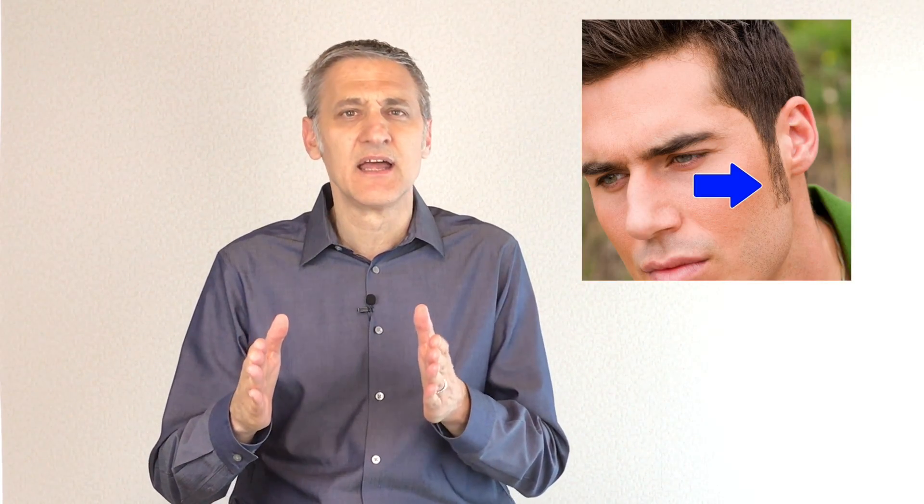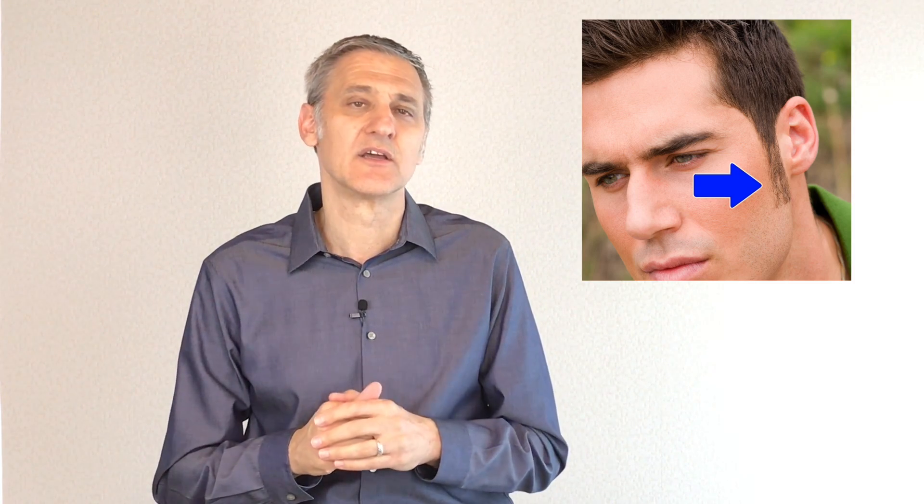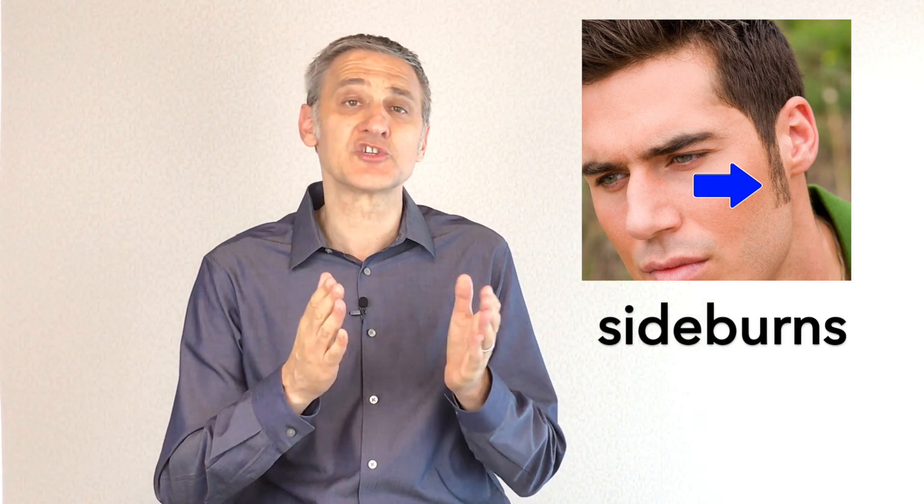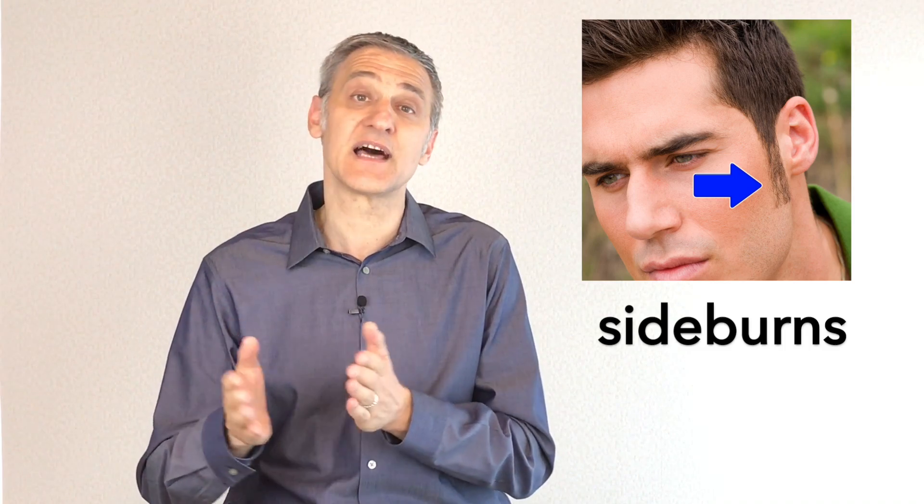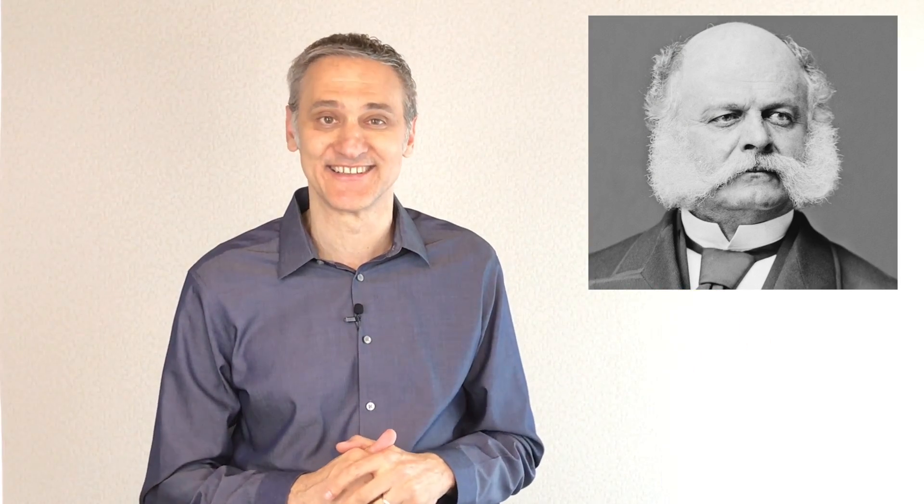Some men grow hair down the side of their face. And because there is one on each side of the face, we use the plural form and call them sideburns. Some sideburns are short or trimmed, while other sideburns are quite long. The name sideburns came from an American politician named Ambrose Burnside. Check out his unique facial hair. When sideburns are long, they are called mutton chops. People thought the long sideburn hair resembled the shape of a mutton chop, which is a butcher cut from an adult sheep.